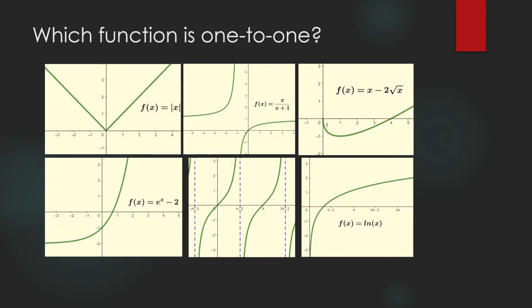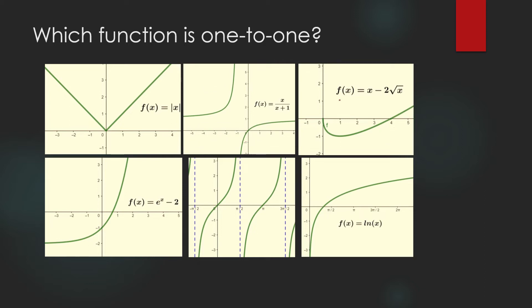Which function is one-to-one? Using the horizontal line test: the function f(x) = |x| is not one-to-one because it has two points of intersection. The function f(x) = x/(x+1) is a one-to-one function, again because of the horizontal line test. The function f(x) = (x−2)√x is not one-to-one because a horizontal line intersects the graph at two points. However, f(x) = e^(x−2) is a one-to-one function.